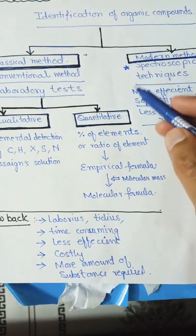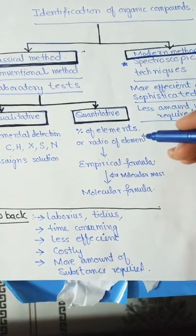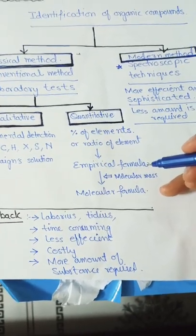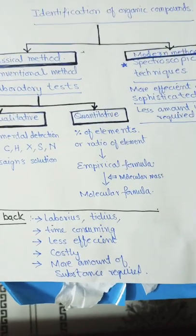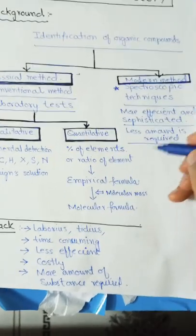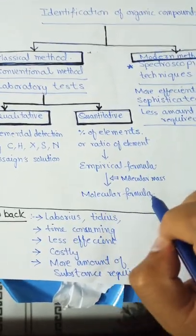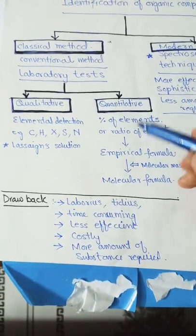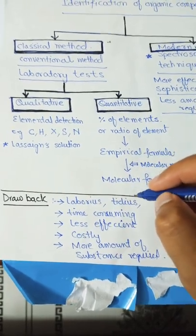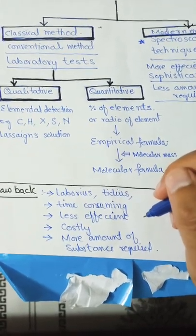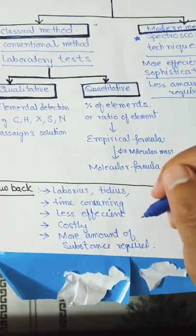In quantitative analysis, the percentage or ratio of an element in a compound was measured, through which we determine the empirical formula. With the help of molecular mass — determined using viscosity method or some other method — we finally get the molecular formula. However, these classical or conventional methods were laborious, tedious, time-consuming, less efficient, and required a large amount of substance.